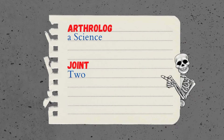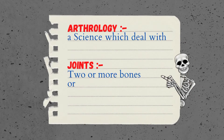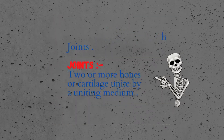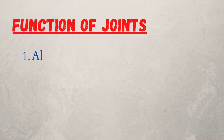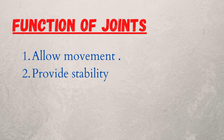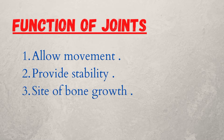What is arthrology? It's a science which deals with joints. A joint means two or more bones or cartilage united by a uniting medium. The functions of joints are: one, allow movement; two, provide stability; three, site of bone growth.